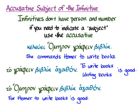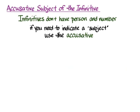Hanson and Quinn will tell you that you could also say 'Homer's writing books is good,' though that involves a possessive, a genitive, and a gerund — a few too many removes from the infinitive — but it would be good English as well. The real thing to remember is that infinitives don't have person and number, but if you need to indicate a subject, you're going to use the accusative. That's the basic idea.